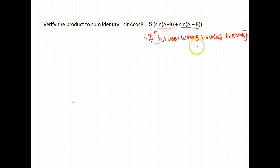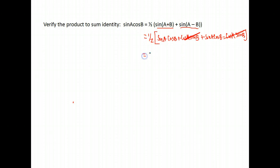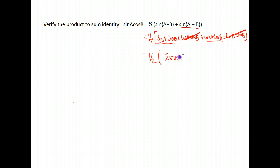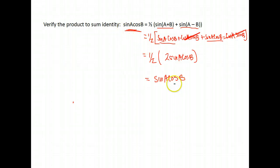Now let's simplify. Notice we have a positive cosine A sine B and a negative cosine A sine B — those cancel and become zero. We're left with one half times two sine A cosine B's, and two times one half is just one. So we've proven the identity: one half times sine of A plus B plus sine of A minus B is equivalent to sine A cosine B.